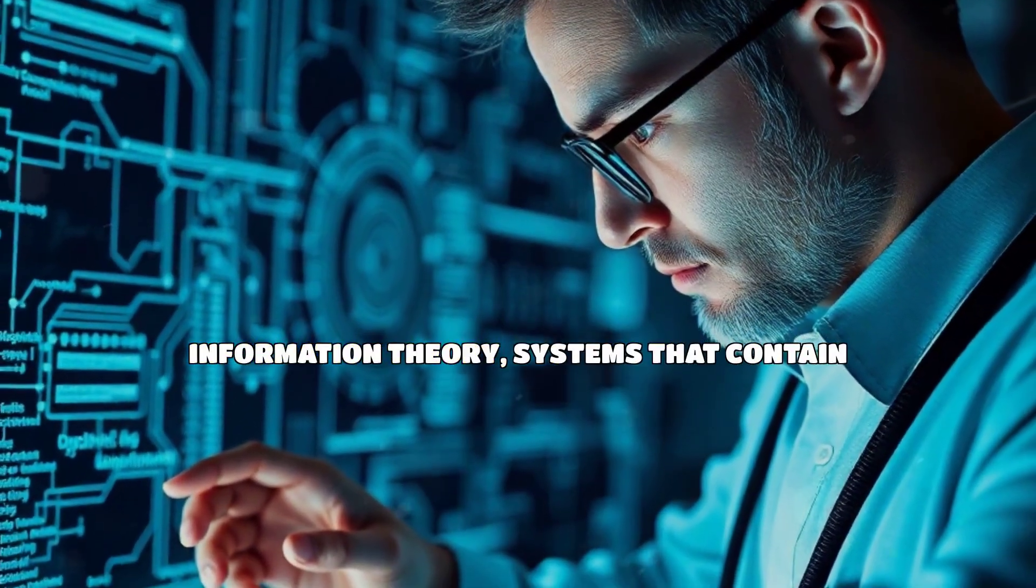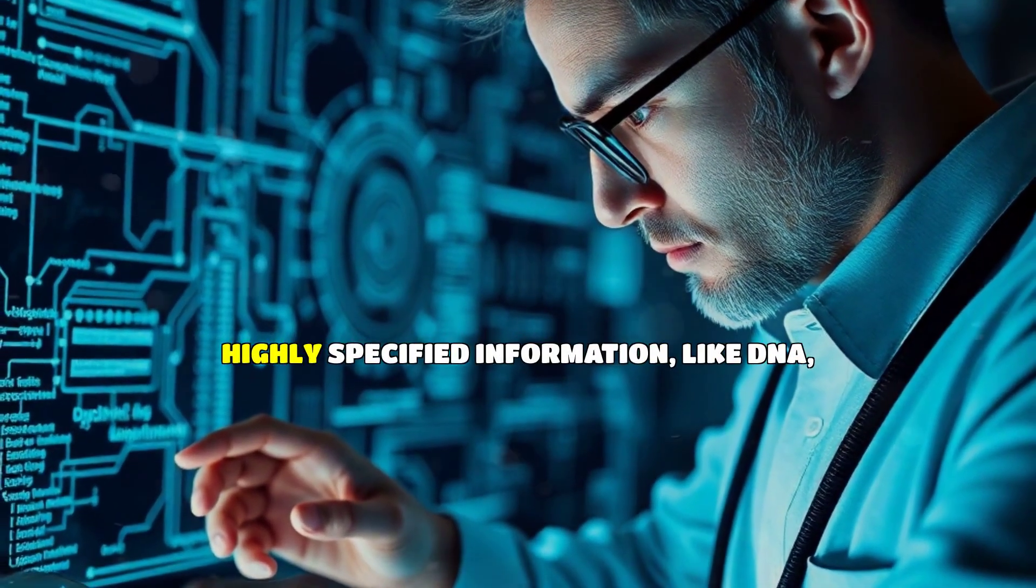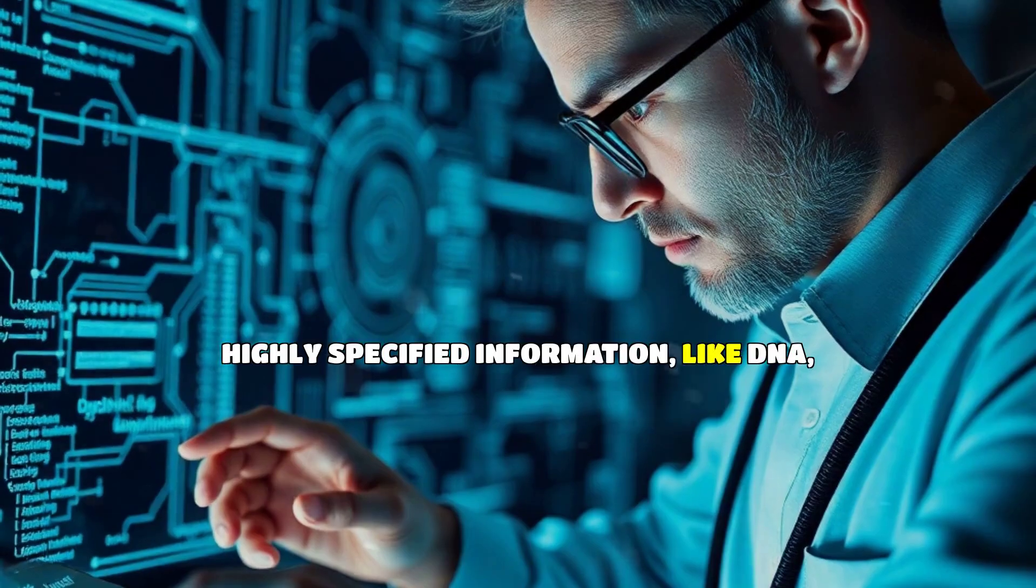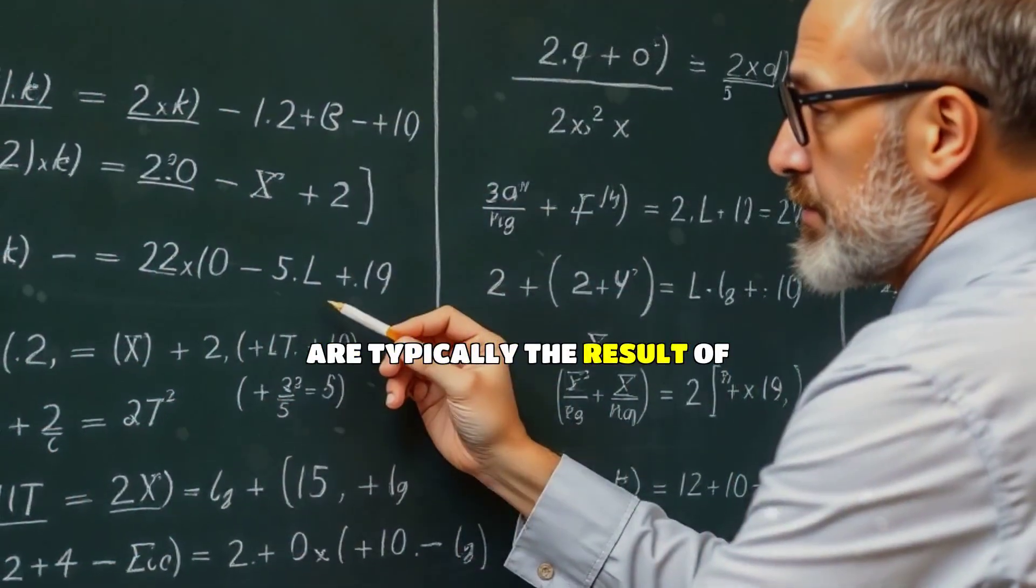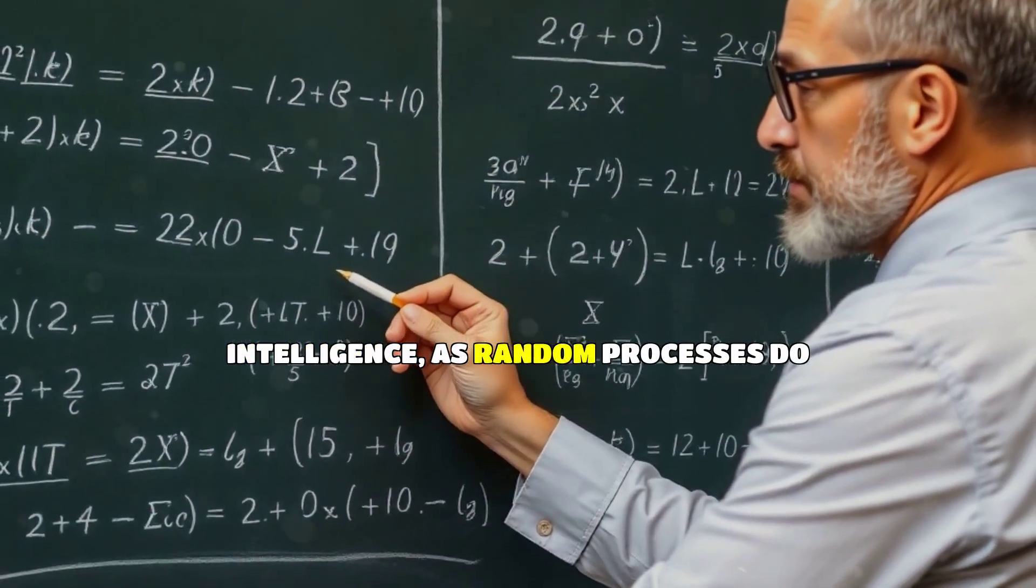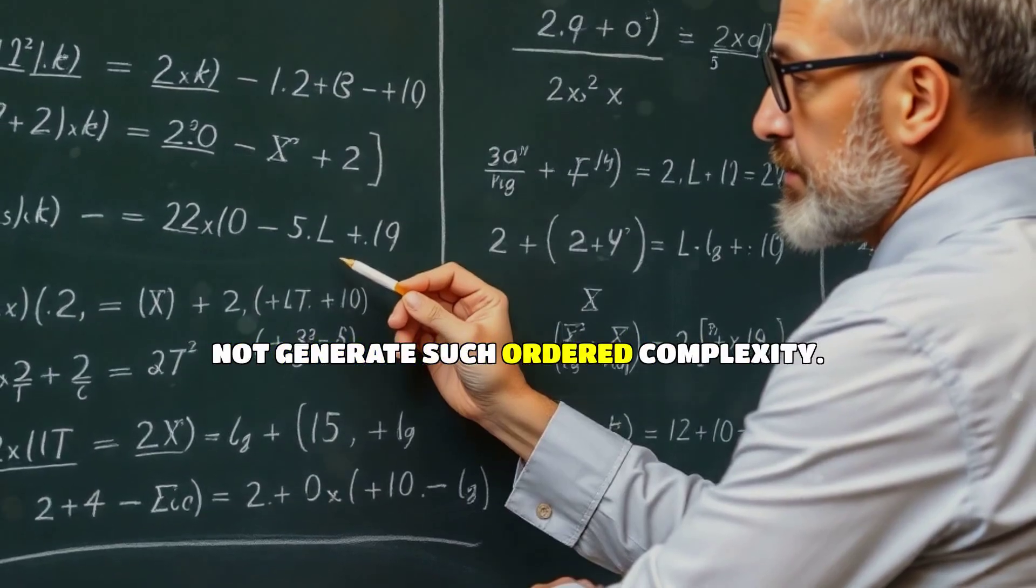According to information theory, systems that contain highly specified information, like DNA, are typically the result of intelligence, as random processes do not generate such ordered complexity.